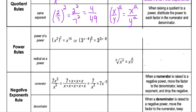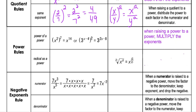Our next properties are the power rules. When we raise a power to a second power — a power of a power — we multiply those exponents together. For example, x squared raised to the seventh power gives x to the fourteenth. So we've now seen when to add exponents (same base, multiplying), when to subtract (same base, dividing), and when to multiply (power of a power).